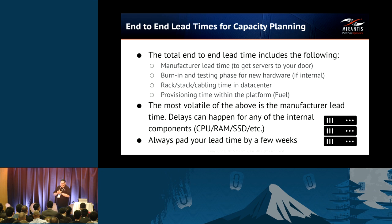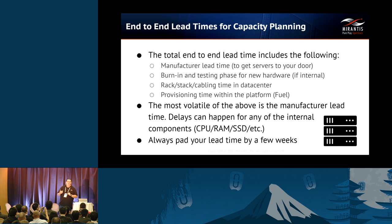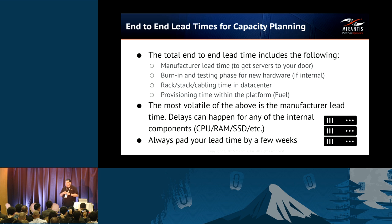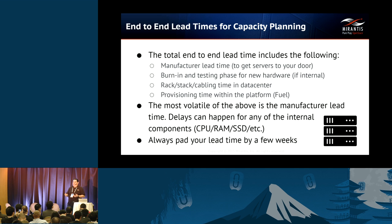The total end-to-end lead time includes a couple of things. The first is the manufacturer lead time to get the servers to your door. Depending on who the manufacturer is and the type of hardware you standardized on, it could take anywhere from three to four weeks up to three to six months to get servers just to your door at the data center. That doesn't even count provisioning them in the cloud.